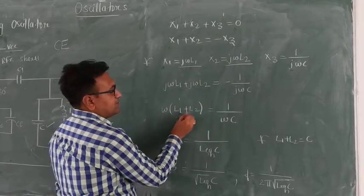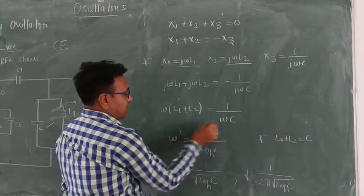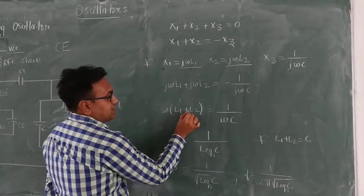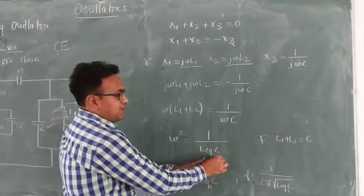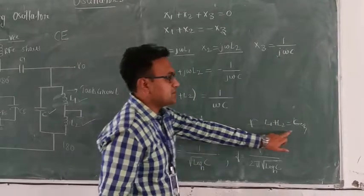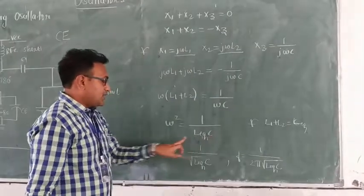Here, omega is taken to one side. L1 plus L2 is equal to 1/(ω²C). This omega is taken as LHS, that is from omega square. L1 plus L2 goes to the RHS. This is written as L equivalent. So that is L1 plus L2 is equal to L equivalent.